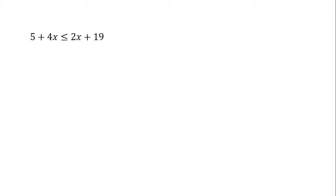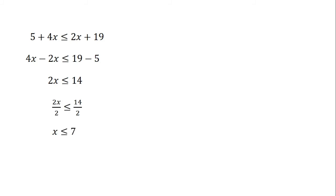Let's solve this expression. We group like terms and simplify: 4x minus 2x is less than or equal to 19 minus 5, giving 2x is less than or equal to 14. Dividing both sides by 2, we get x is less than or equal to 7. So the number is less than or equal to 7 — any number satisfying that condition will satisfy the given question.